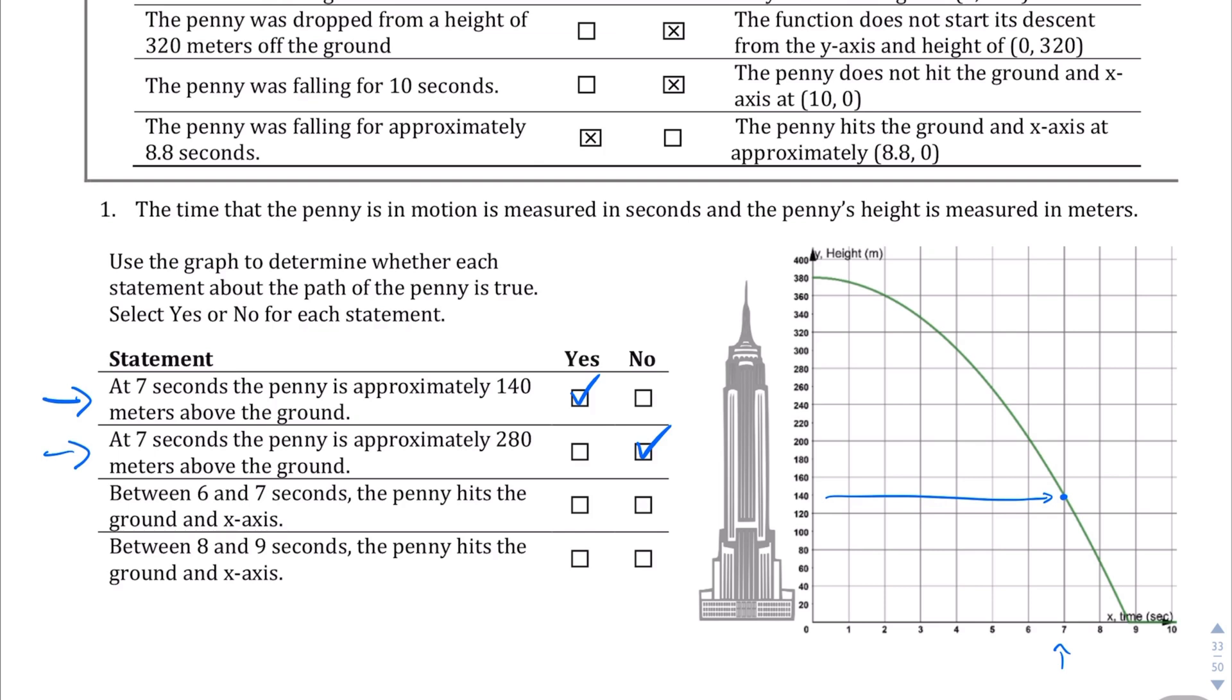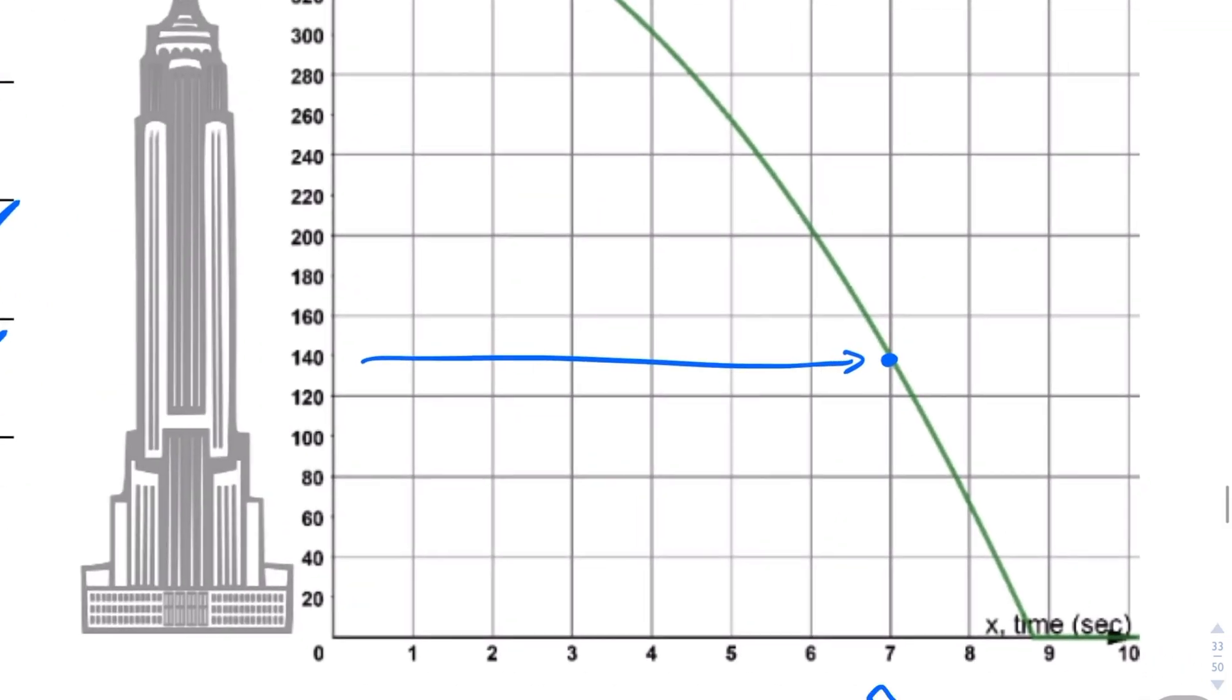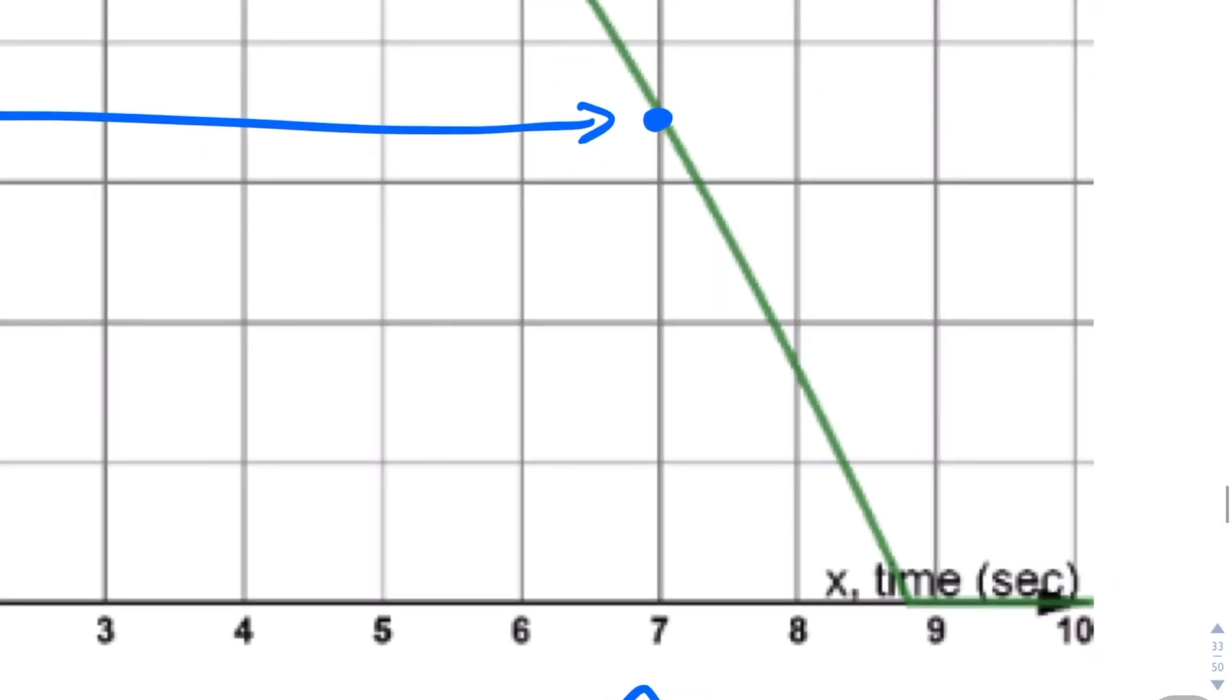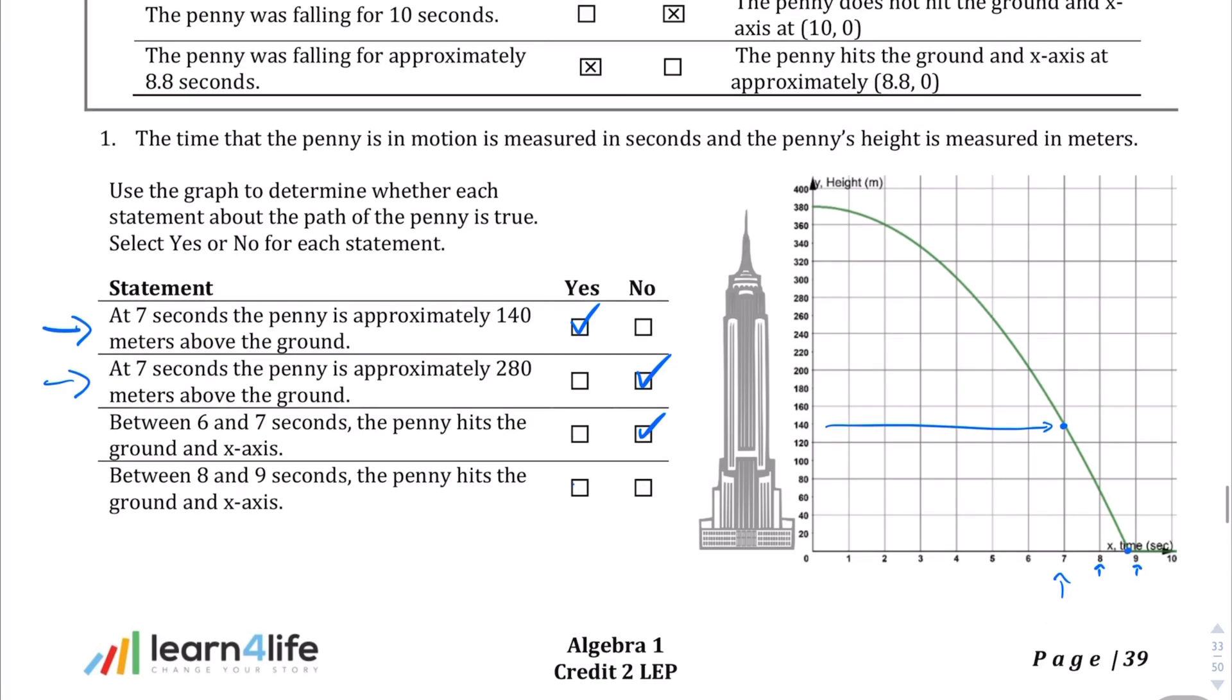Between six and seven seconds the penny hits the ground. Well, that's not true. The penny is still up in the air, so I'll say no to that. And then between eight and nine seconds the penny hits the ground. That probably is true. Let's take a look. Yes, somewhere between the eight and the nine second mark the penny does hit the ground right there. So I'm going to say this is yes.